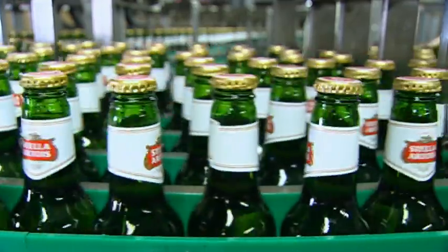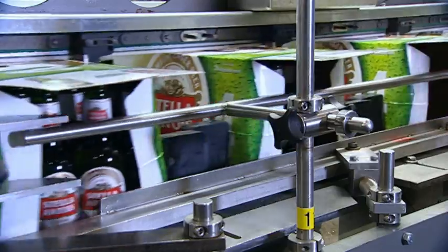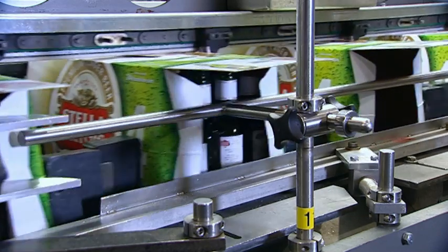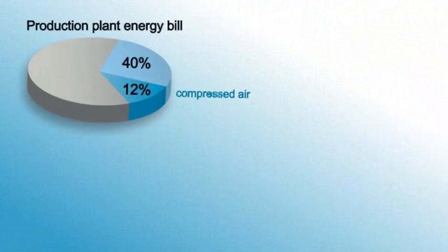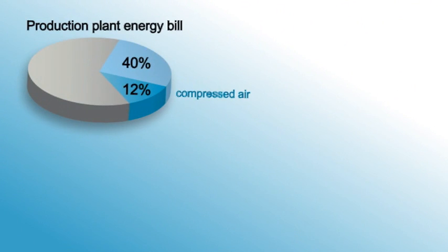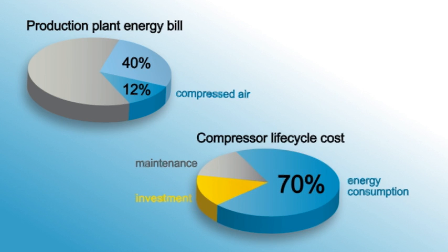Many industrial processors rely on compressed air, and that's reflected in the energy bill. Compressed air typically accounts for 12% up to 40% of a plant's energy consumption. In addition, the energy cost represents 70% of the life cycle cost of a compressor. So a huge potential for optimization and savings can be found in the compressor room.